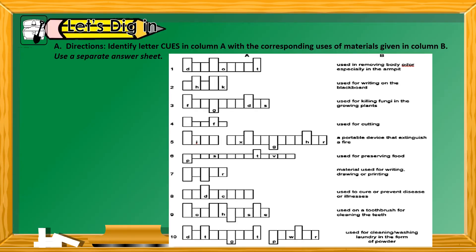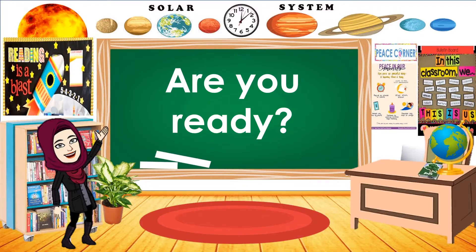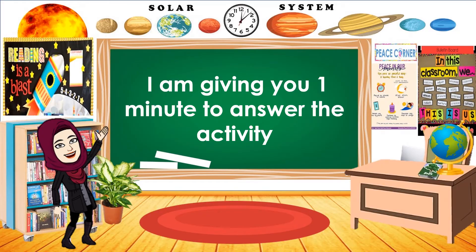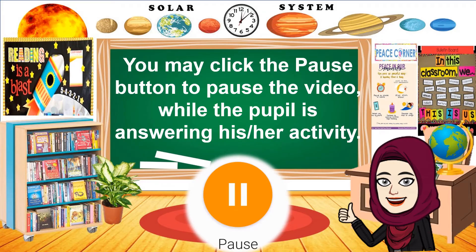Now let's answer let's dig in. Directions: Identify the letter cues in column A with the corresponding uses of materials given in column B. Use a separate answer sheet to answer this activity. Are you ready? I'm giving you one minute to answer the activity.